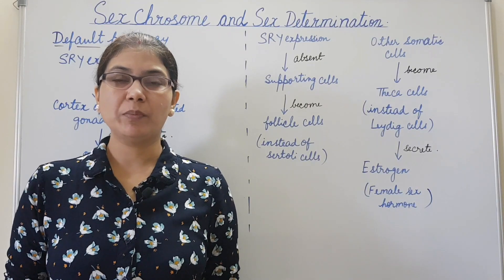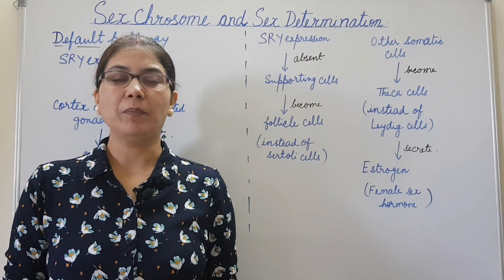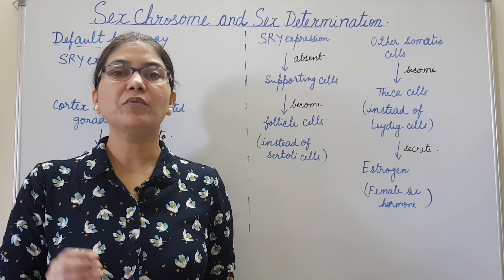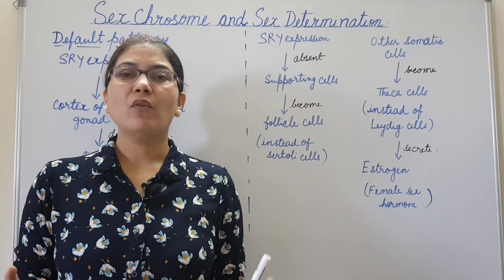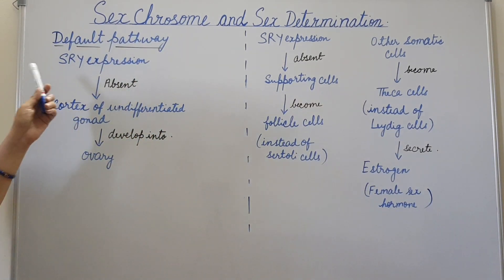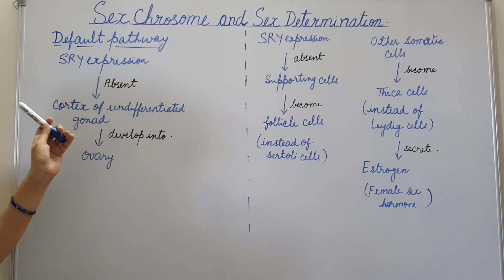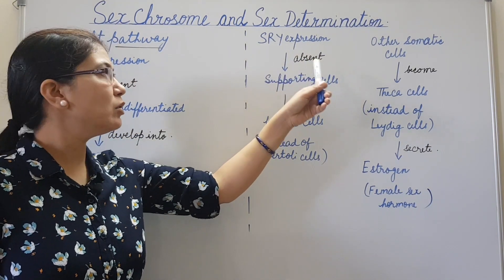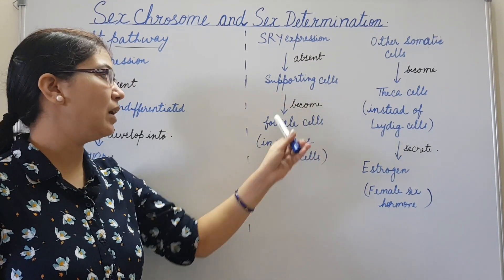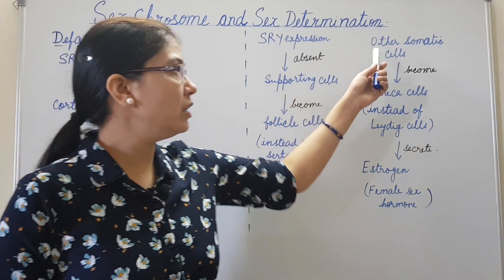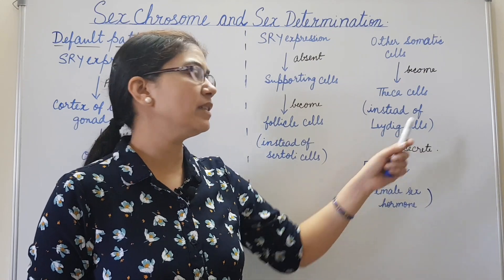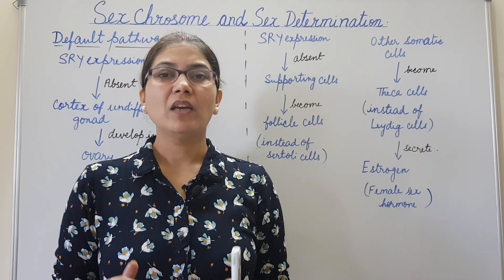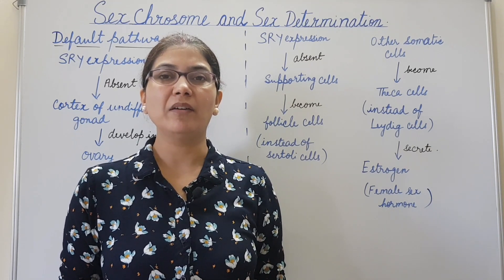In females, only X chromosomes are present. The pathway responsible for development of female sex organs and secondary sexual characters is known as the default pathway. In this default pathway, in the absence of SRY gene expression, the cortex of the undifferentiated gonad develops into an ovary. Supporting cells become follicle cells instead of Sertoli cells, and other somatic cells become theca cells instead of Leydig cells. These secrete estrogen, the female sex hormone, which is responsible for the development of secondary sexual characters in females.